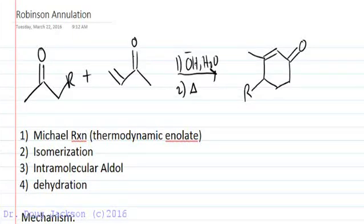Let's talk about the Robinson annulation. Annulation means making a ring. We're going to start with two compounds that are not cyclic and make a ring.